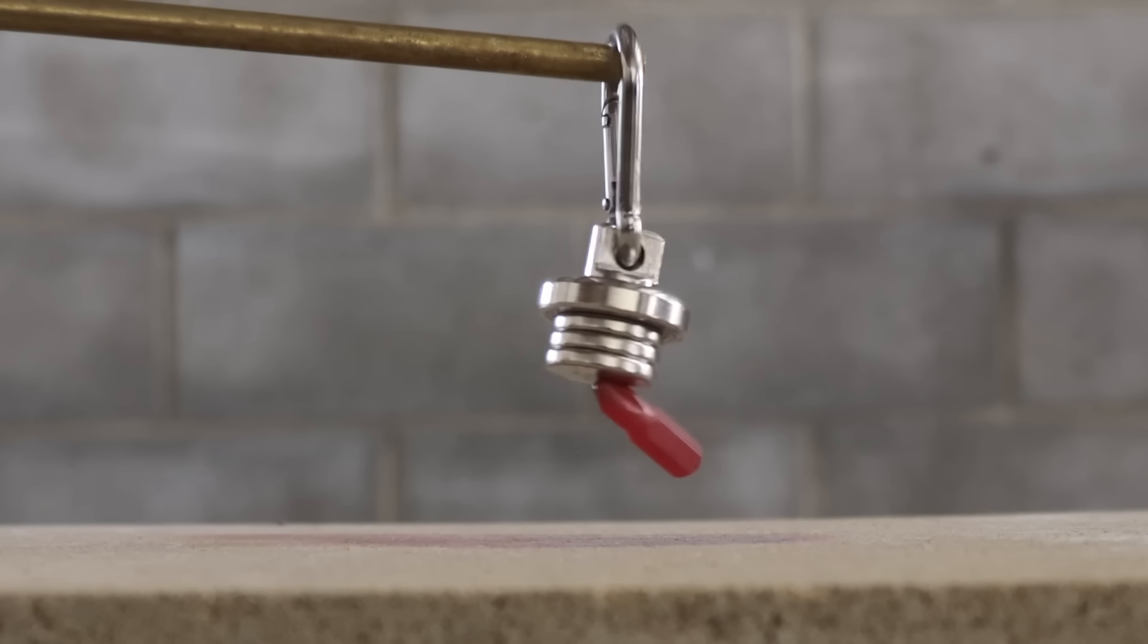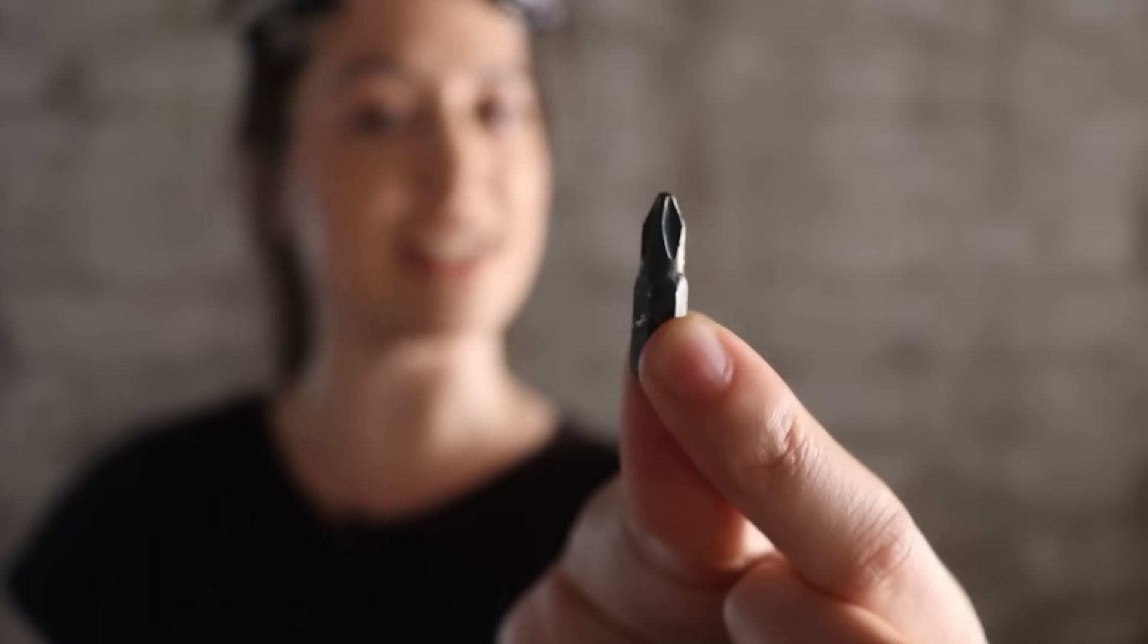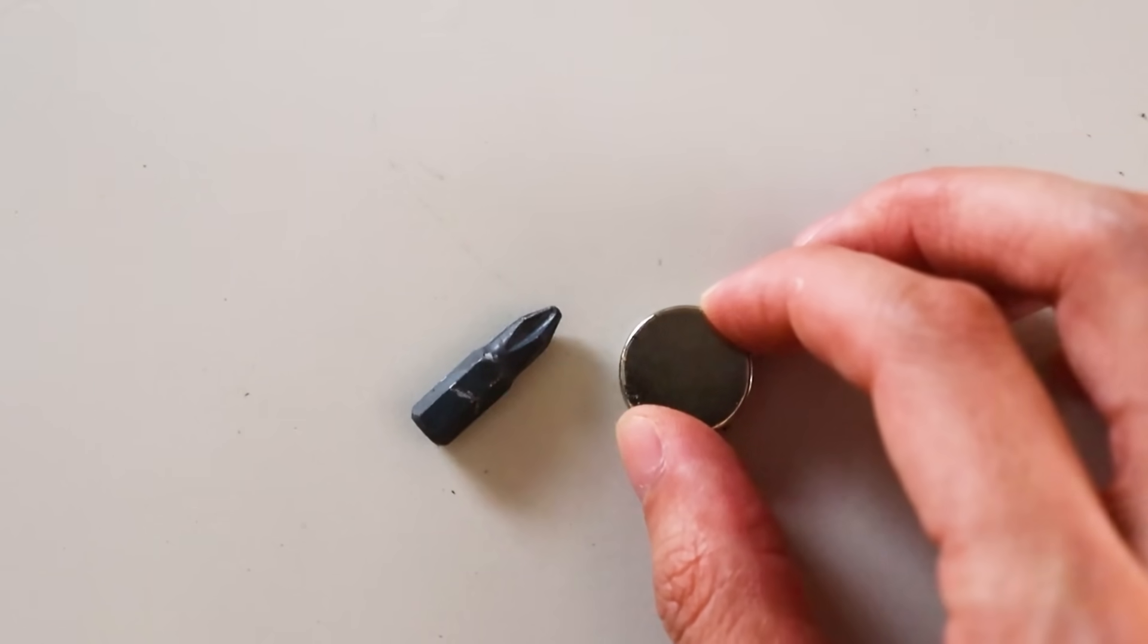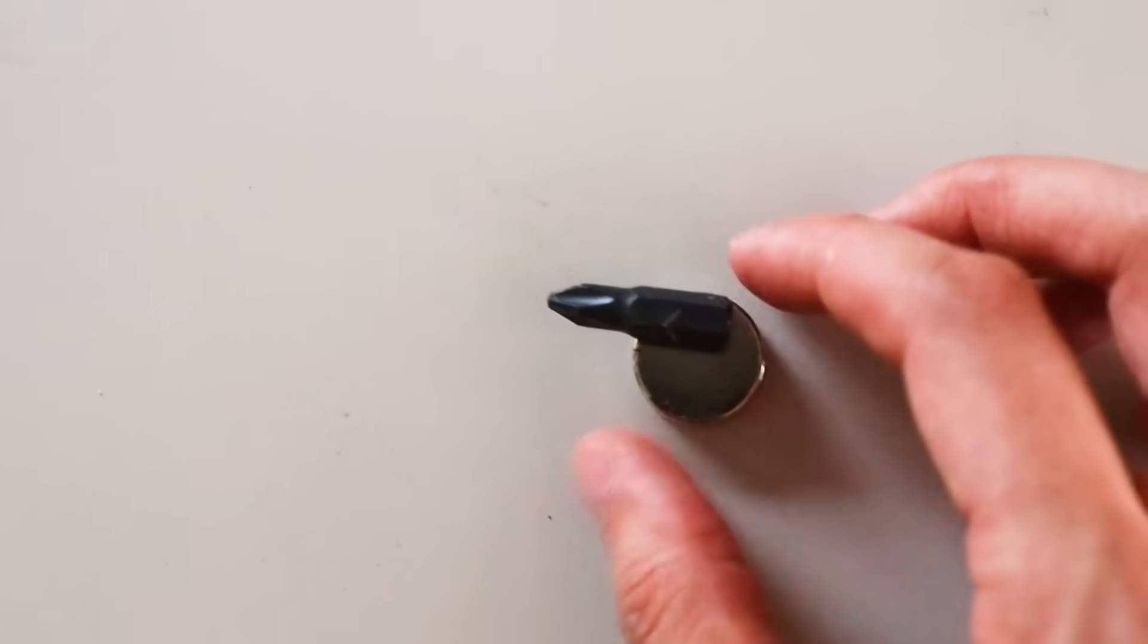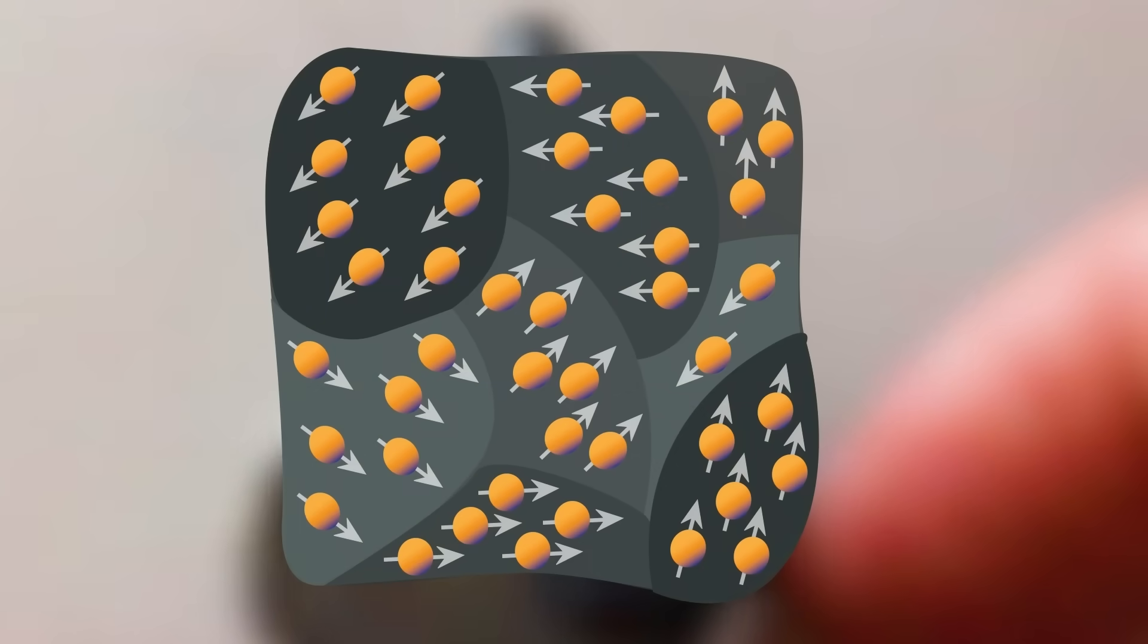First things first, what just happened here? This is a piece of steel that contains iron. Iron behaves as a temporary magnet at room temperatures. What makes it magnetic is the orientation of its individual atoms.